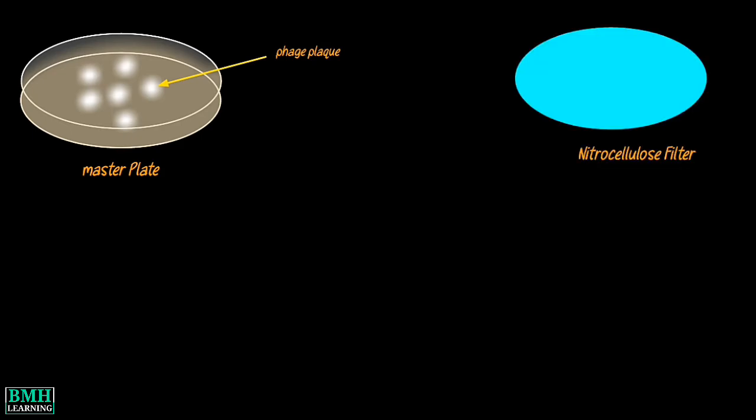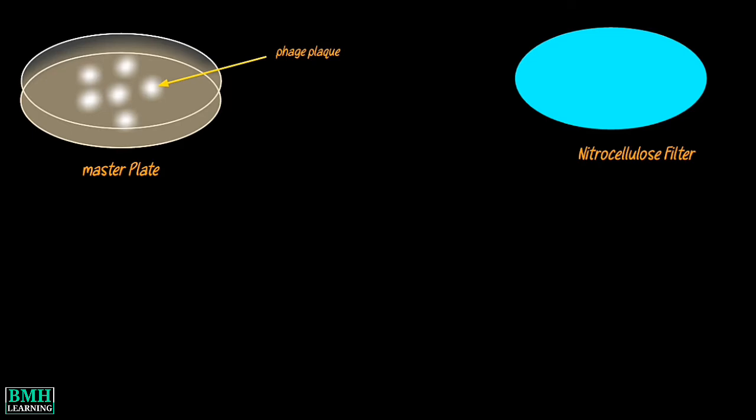One of the most common library screening techniques is called plaque hybridization. After recombinant lambda virions form plaques on the lawn of E. coli, a nitrocellulose filter or membrane is placed on the surface of the petri dish to pick up lambda phages from each plaque.